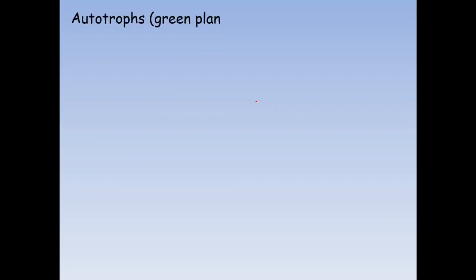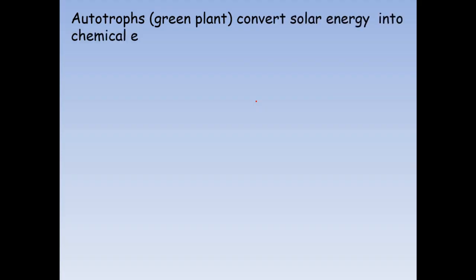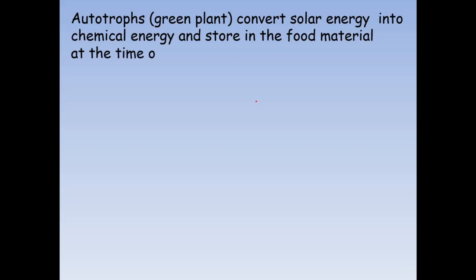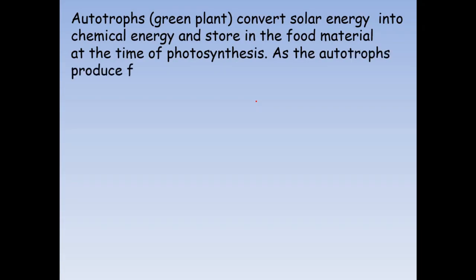The autotrophs, that is the green plants, convert solar energy into chemical energy and store it in the food materials at the time of photosynthesis. As the autotrophs produce food, they are called the producers.